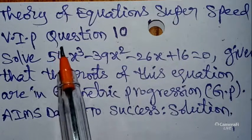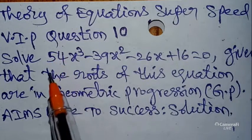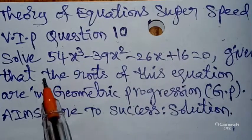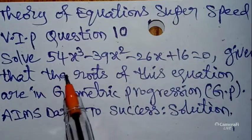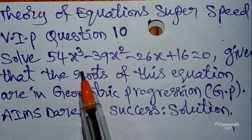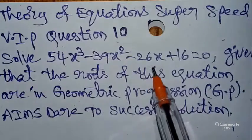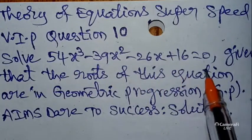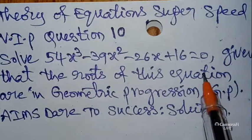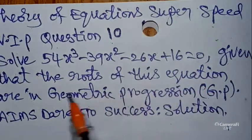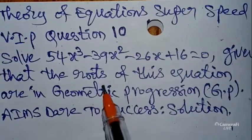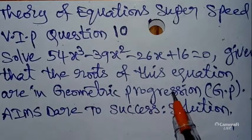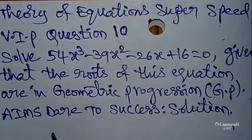Today our question is: Solve 54x³ minus 39x² minus 26x plus 16 equals zero, given that the roots of this equation are in Geometric Progression (GP).